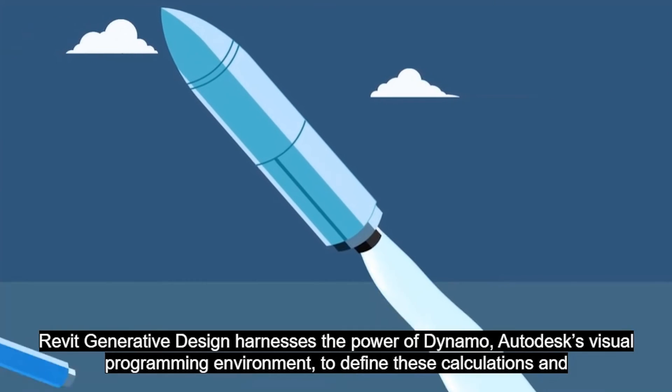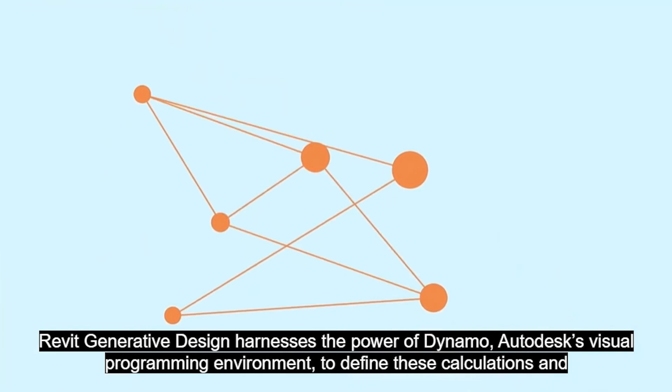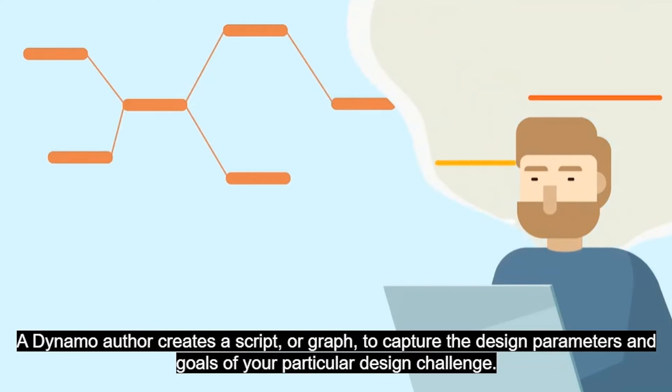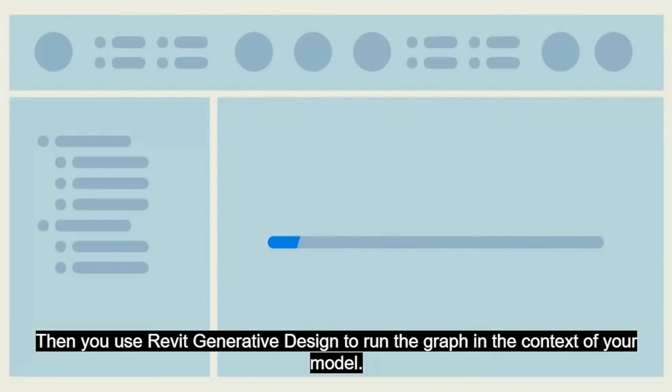Revit Generative Design harnesses the power of Dynamo, Autodesk's Visual Programming Environment, to define these calculations and relationships. A Dynamo author creates a script, or graph, to capture the design parameters and goals of your particular design challenge. Then, you use Revit Generative Design to run the graph in the context of your model.